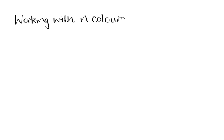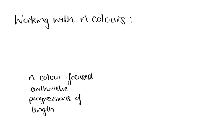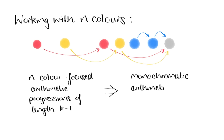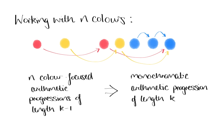Say we have n different colours of bead and we're trying to force a monochromatic progression of length k. If we have n colour-focused progressions of length k-1 — so one progression in each colour — then whatever colour the focus point is, it will have to agree with one of the colour-focused progressions, and these will form a monochromatic progression of length k. In the example shown, if we only have three colours of bead to work with, then whatever colour we choose for the grey bead will create either a red progression of length 3, a blue progression of length 3, or a yellow progression of length 3.